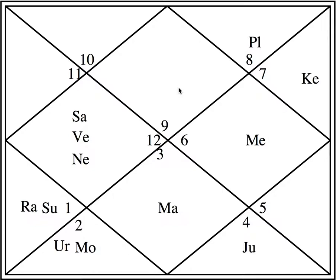To know this, you need to know the sign numbers and which planets rule them. Mars rules signs 1 and 8 — Aries and Scorpio. Venus rules 2 and 7 — Taurus and Libra. Mercury rules 3 and 6 — Gemini and Virgo. Jupiter rules 9 and 12 — Sagittarius and Pisces. Saturn rules 10 and 11 — Capricorn and Aquarius. Scorpio is also co-ruled by Ketu, and Aquarius is also co-ruled by Rahu.